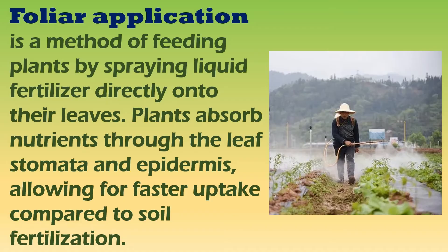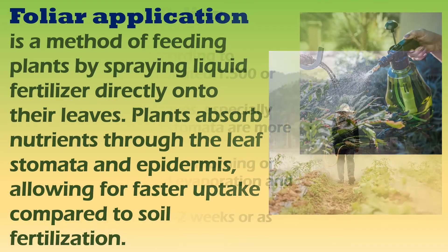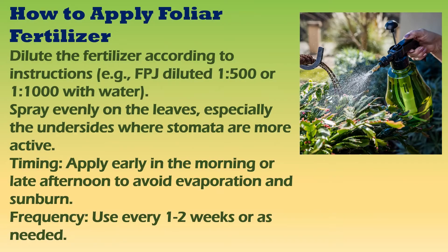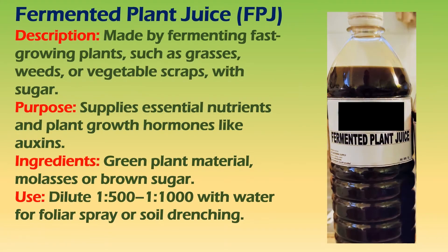Foliar application is a method of feeding plants by spraying liquid fertilizer directly onto their leaves. Plants absorb nutrients through the leaf stomata and epidermis, allowing for faster uptake compared to soil fertilization. Fermented Plant Juice (FPJ) is made by fermenting fast-growing plants like grasses, weeds, or vegetable scraps with sugar. It provides essential nutrients and plant growth hormones such as auxins. Key ingredients include green plant material and molasses or brown sugar. Dilute 1:500 to 1:1,000 with water for foliar spraying or soil drenching.